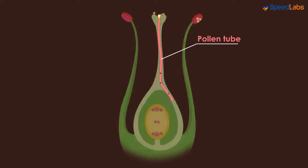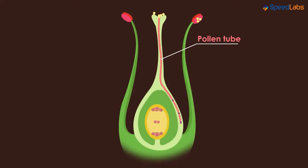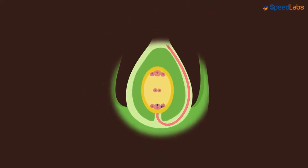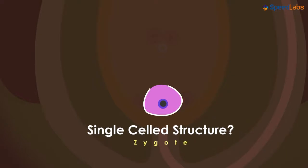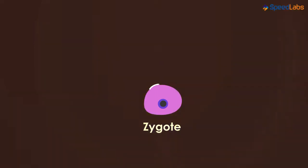The pollen tube will travel through the entire style and finally reach the ovary. Here, the male gamete fuses with the female gamete to form a single cell structure. The fusion of the two will create a single unit called a zygote, which will further develop into an organism.